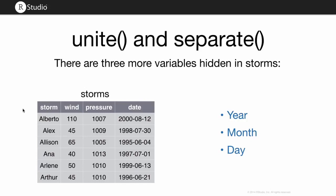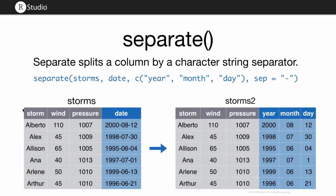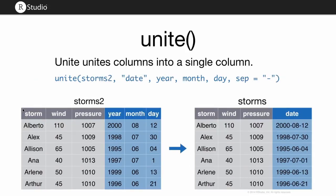TidyR also has two other useful functions. If you look at the storms dataset, you might notice it has three more variables you could extract from the date column: year, month, and day. The separate function takes a single column and splits it into multiple columns based on a separator character. Running that code gives a new data frame where date is split into year, month, and day columns. The inverse function, unite, takes several columns and puts them together into one column, adding a separator between values. Note that the resulting dates would be character strings and would need to be reparsed to behave as dates in R.